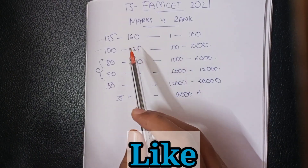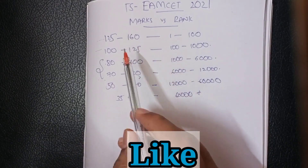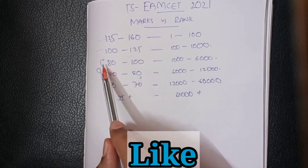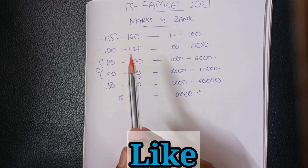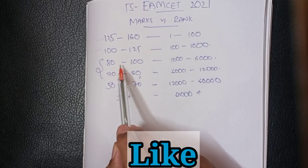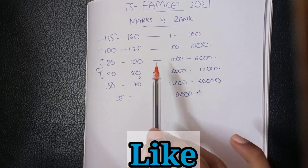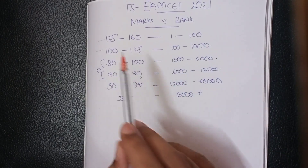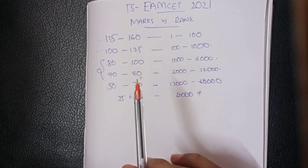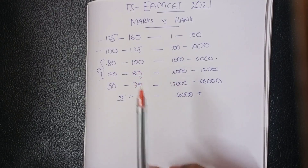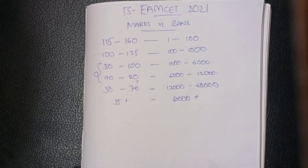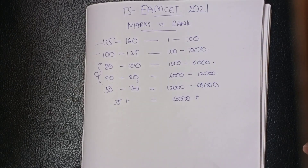There is a lot of difference between the 70-80 marks range. If we want a good college, we will need a minimum score of 80. We don't have IP weightage in the M-set.